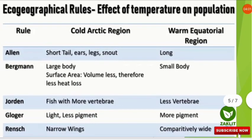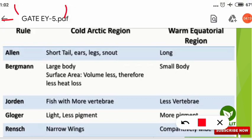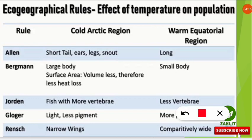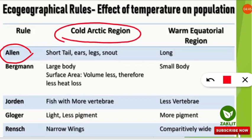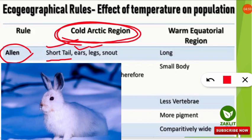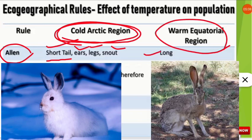Eco-geographical rules are rules proposed by scientists based on geographical regions for organisms found in different geographies. The first is Allen's Rule, given by Joel A. Allen in 1877, which states that animals adapted to cold arctic climates have shorter appendages and shorter limbs — short tails, short ears, and short legs. In contrast, similar species found in equatorial regions have long or large tails, ears, and body appendages.